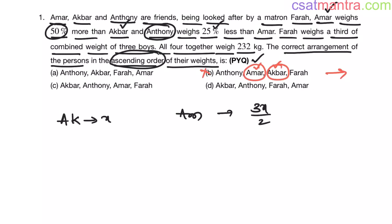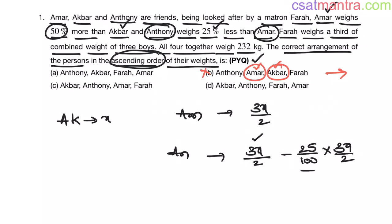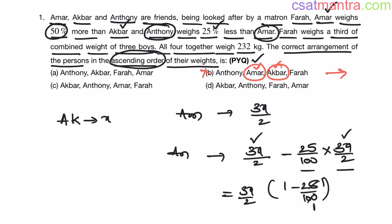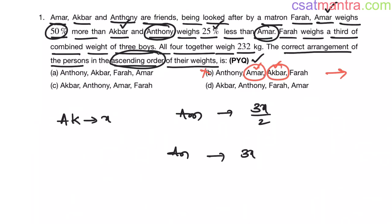Anthony weighs 25% less than Ammar. So Anthony's weight equals 3x/2 minus 25% of 3x/2. Taking 3x/2 common, this gives 3x/2 × (1 − 25/100) = 3x/2 × (1 − 1/4) = 3x/2 × 3/4 = 9x/8, which equals 1.125x.